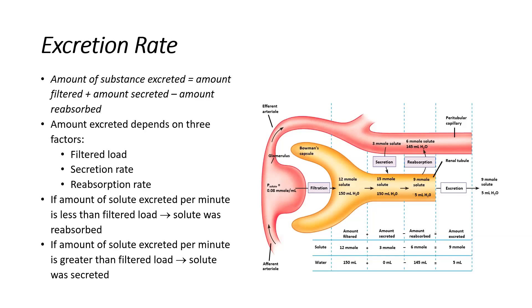If we do some basic math, that'll make a little more sense. If we filter a certain amount of substance across the glomerulus, that is how much was being filtered. If we add how much was being secreted — that is how much is moving from the blood back into the tubule — and then subtract how much is being reabsorbed, going from the tubule back into the blood, what we're left with is our excretion rate.